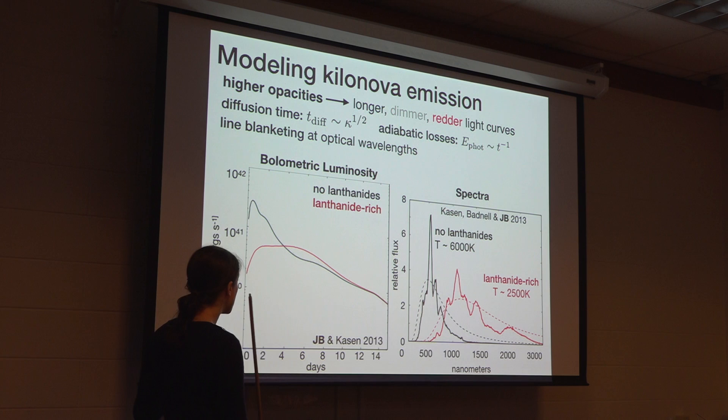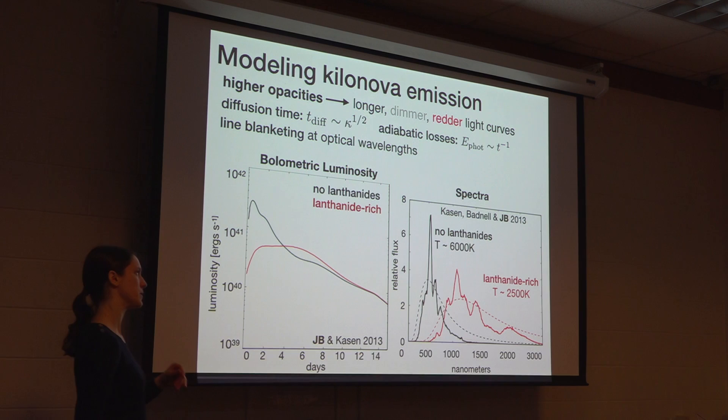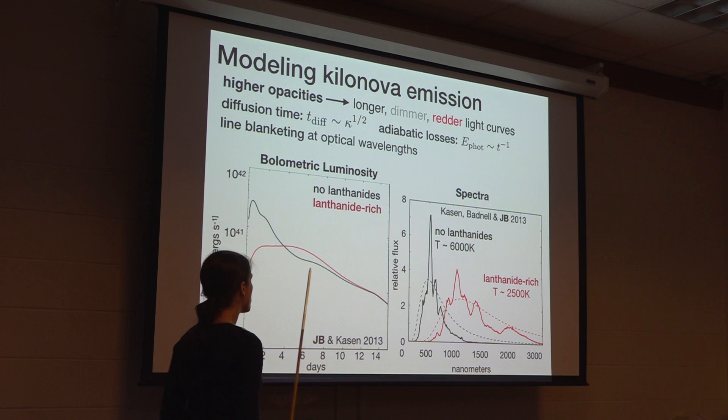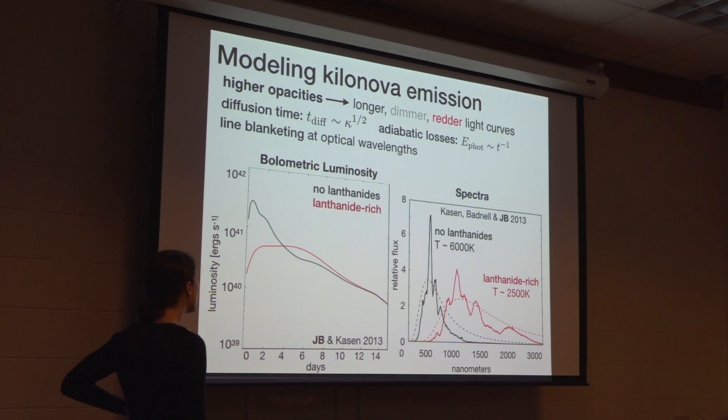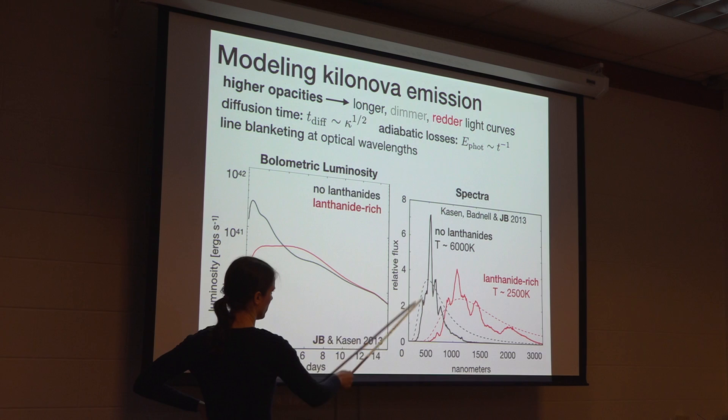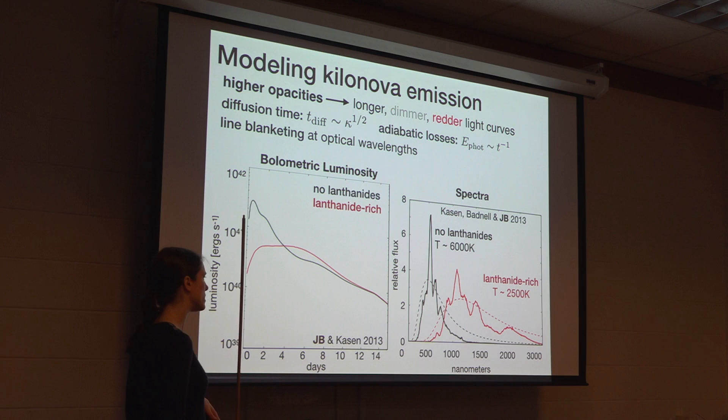The black curves show the results of a composition that lacks those high-opacity species. We have volumetric light curves on the left and spectra on the right. You can see there are three major effects that happen as you start adding lanthanides into your mixture. The first is that the light curves become longer — instead of a very early peak, we have a long plateau. The light curves also become dimmer, and the emission becomes redder. We move from a blackbody centered in the optical to one that is pushed out into the near-infrared.